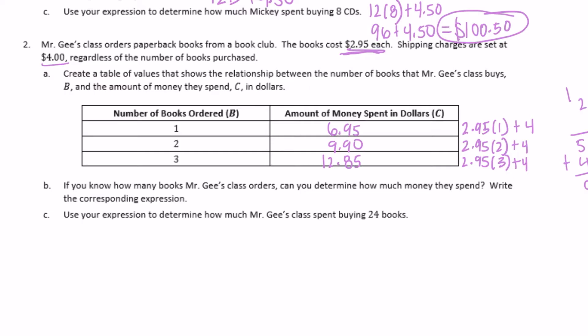Part B: If you know how many books Mr. G's class ordered, can you determine how much money they spent? Write the corresponding expression. The only thing that's changing is the number of books in our expression, so we can just replace that with B for books and say $2.95 times B, plus $4 to ship, which gives you the price for any number of books.